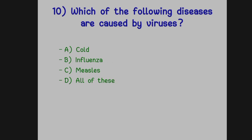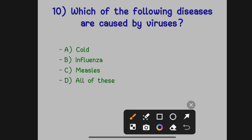The next question: which of the following diseases are caused by viruses? Option A: Cold. Option B: Influenza. Option C: Measles. Option D: All of these. The correct answer is Option D, all of these, because all three diseases are caused by viruses.